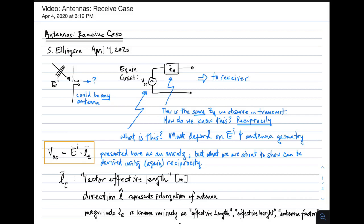The answer is in terms of the equivalent circuit. Here is a Thevenin equivalent circuit, which consists of the open circuit voltage, as usual, and an impedance in series with that voltage source. So this can be a model of this very scenario. If we can get that open circuit voltage and that series impedance, then we have something that we can use to design radio systems.